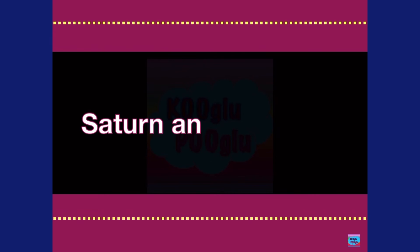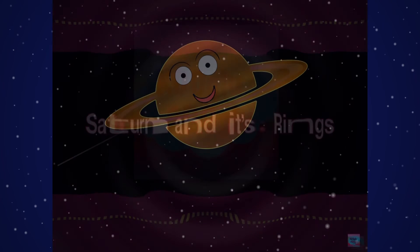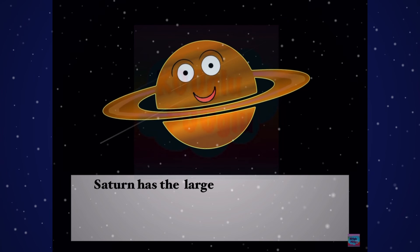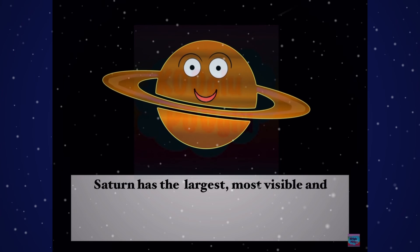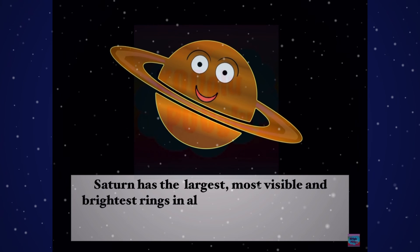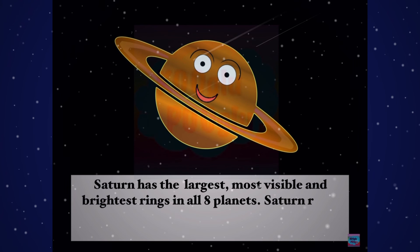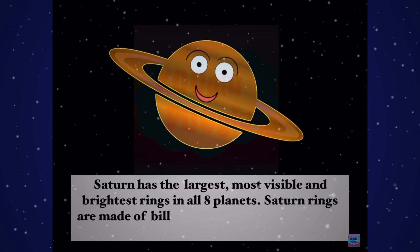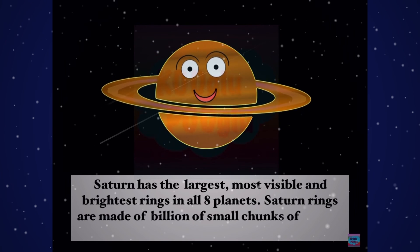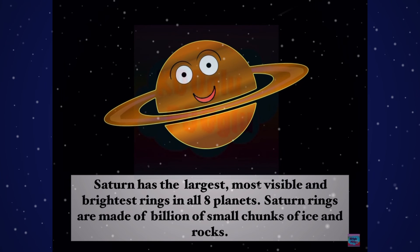Saturn and its rings: Saturn has the largest, most visible, and brightest rings of all the planets. Saturn's rings are made of billions of small chunks of ice and rocks.